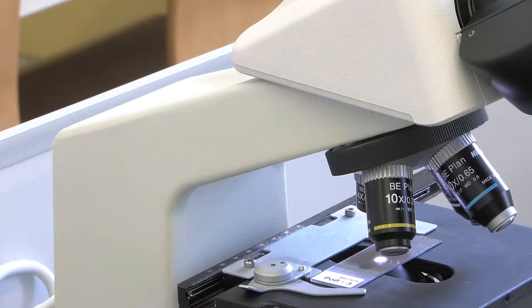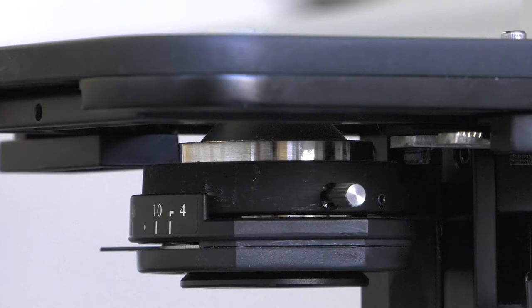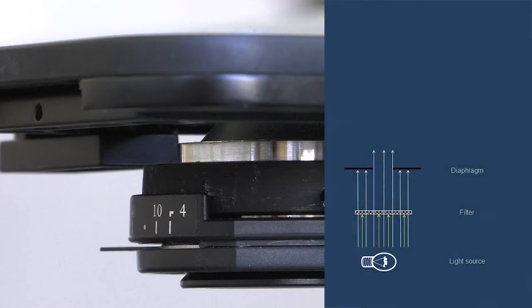The condenser is the first one of the three lenses of a conventional optical microscope. This lens does not magnify the image. Its function is to condense the light from the lamp and project it through the sample.